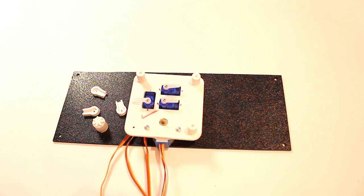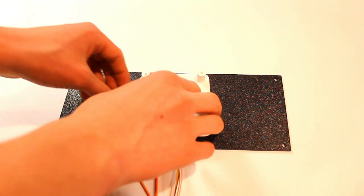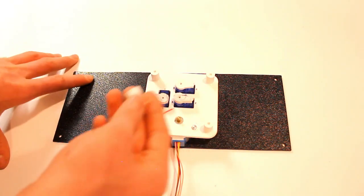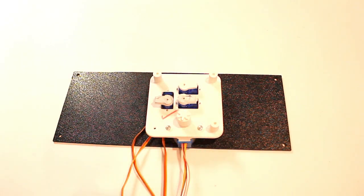Now we can put the servo and motor covers on. You just slide them over and they should snap into place. Then the stepper motor gear just plops onto the stepper motor. Now the back panel looks like this.